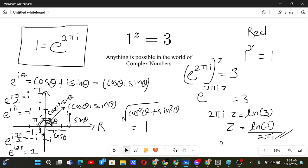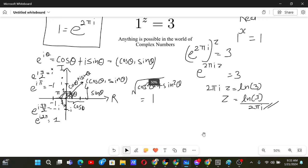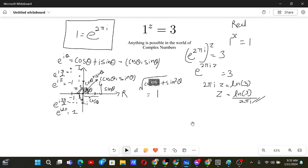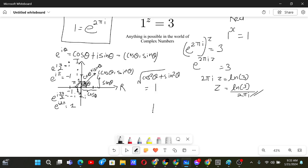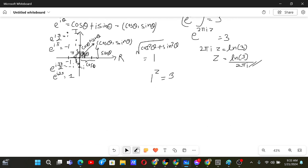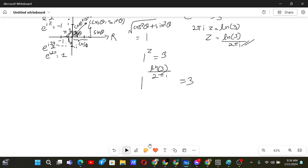Now let's try to check if the answer satisfies the equation or not. 1 to the power z equals 3, so 1 to the power ln(3)/(2πi) equals 3. Now we need to find 1 to the power this thing. Again, for this we need the complex definition of 1. So it's just kind of a circular thing.